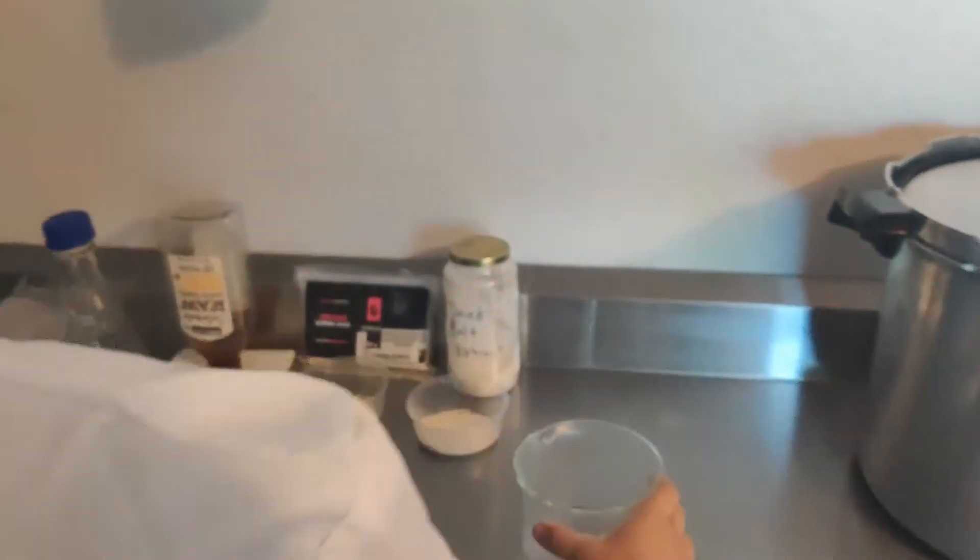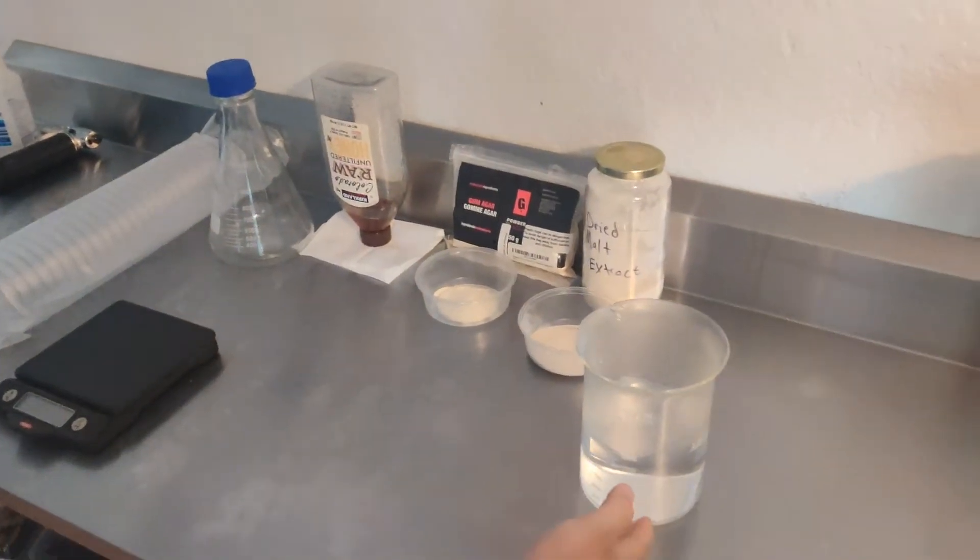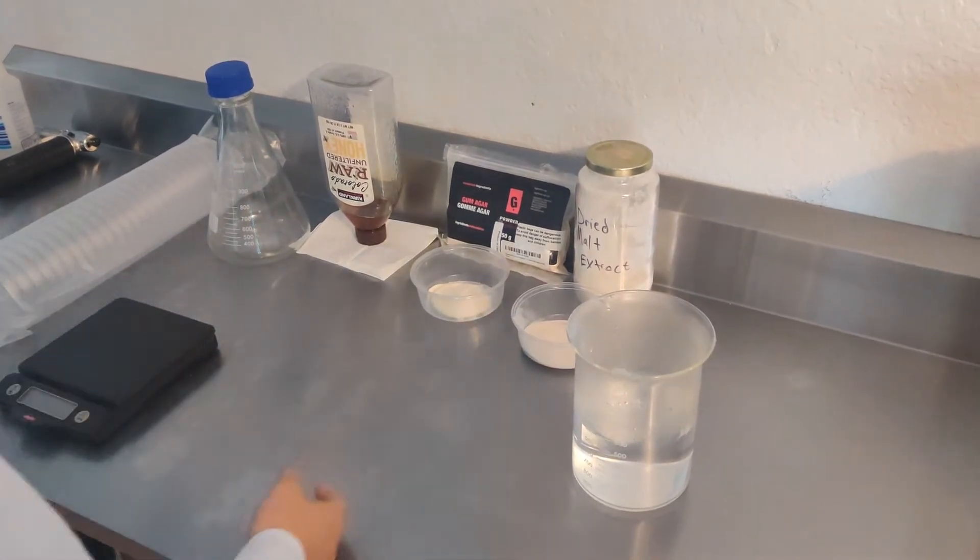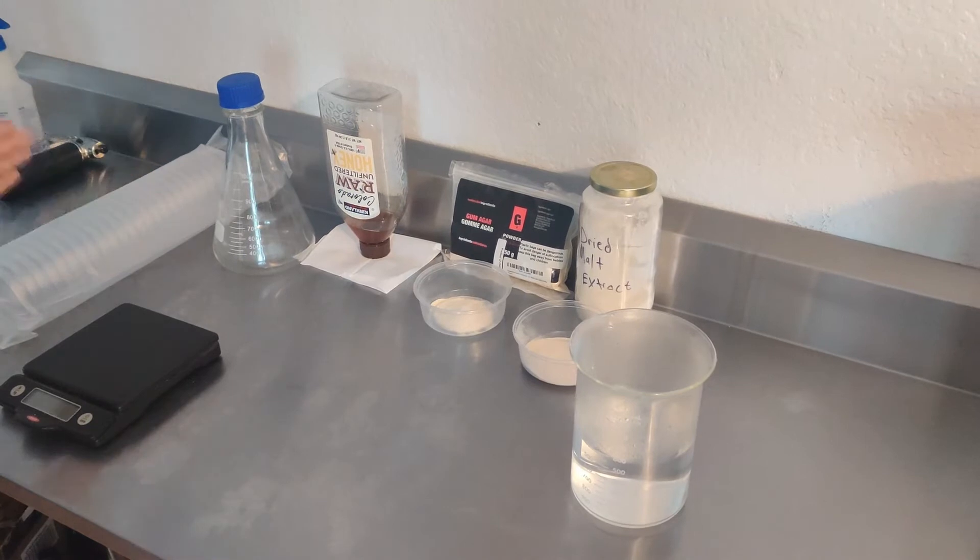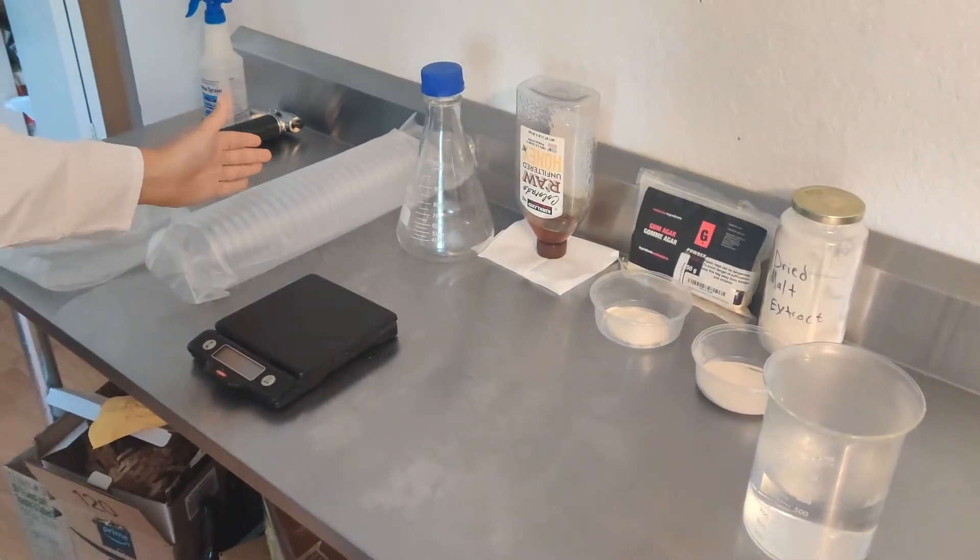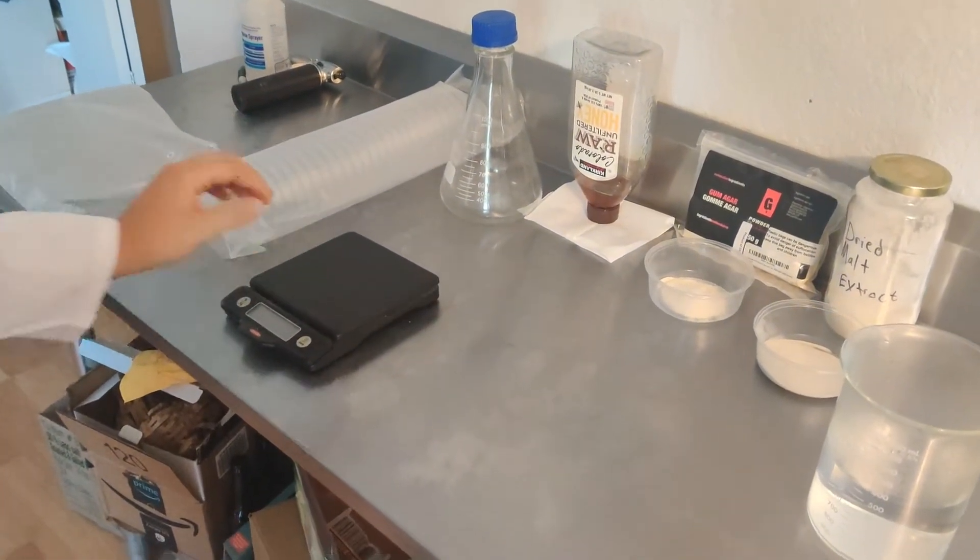Everything you'll need to pour agar is hot water, dried malt extract, agar powder, honey, an Erlenmeyer flask, sterile petri dishes, and a scale.